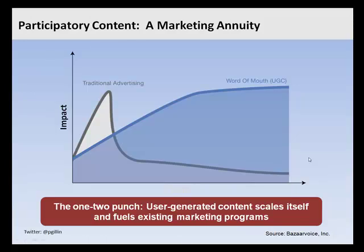Word of mouth is becoming very real — it's expected to be about a $3 billion market this year, and growing very rapidly, largely because the tools available are so sophisticated that they enable people to share their experiences. One of the great advantages of word of mouth marketing is it is an annuity. Traditional advertising has a limited campaign period — typically 13 to 26 weeks — and the payoff is mainly at the front end. With word of mouth marketing and user-generated content, the payoff actually comes at the back end.